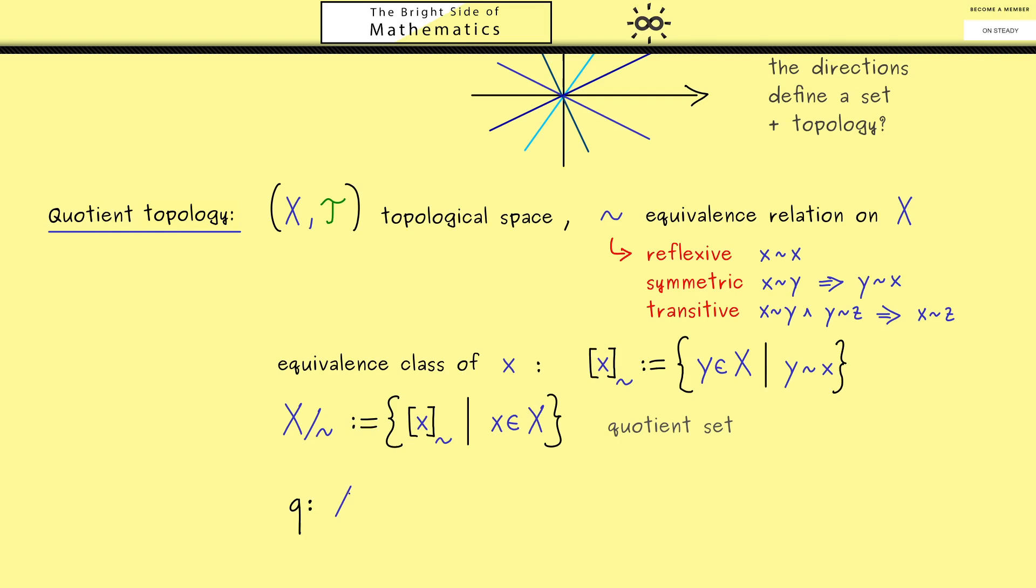Indeed, in order to do this we need the so-called quotient map q that sends the set X to the quotient set X modulo tilde. The definition of this map is very simple: it just takes an element x and sends it to the corresponding equivalence class. Therefore, this map is often called the canonical projection. Here one important thing you should note is that this is indeed a surjective map.